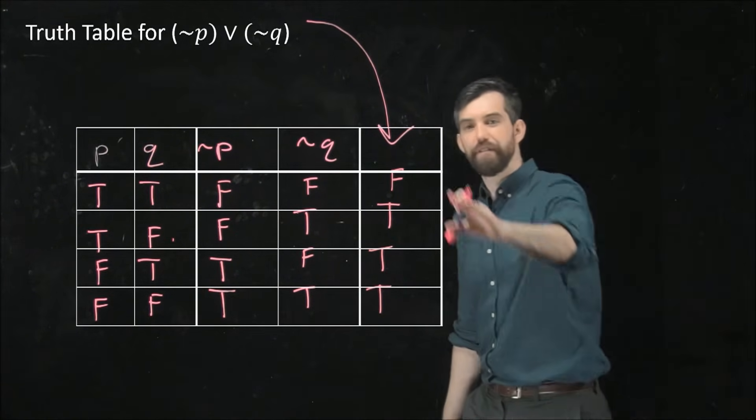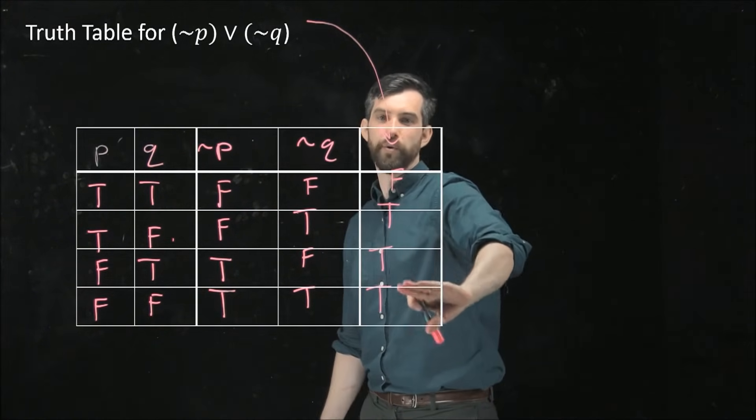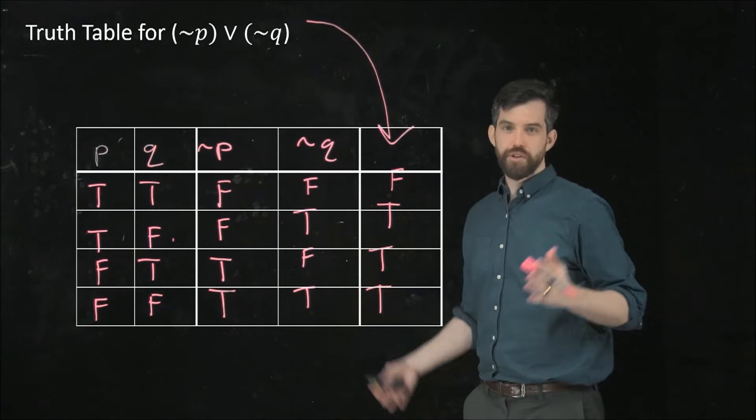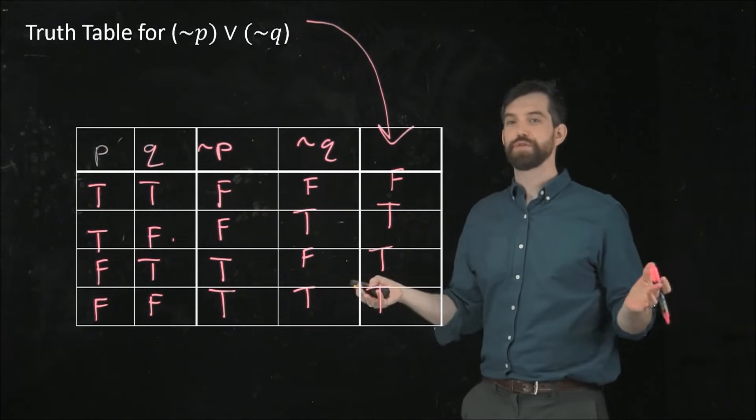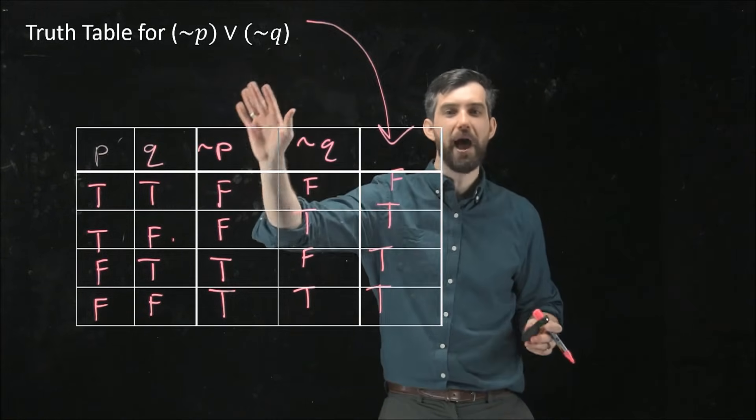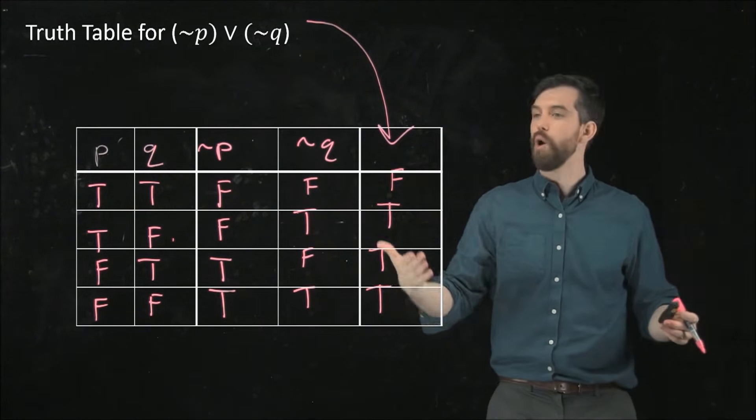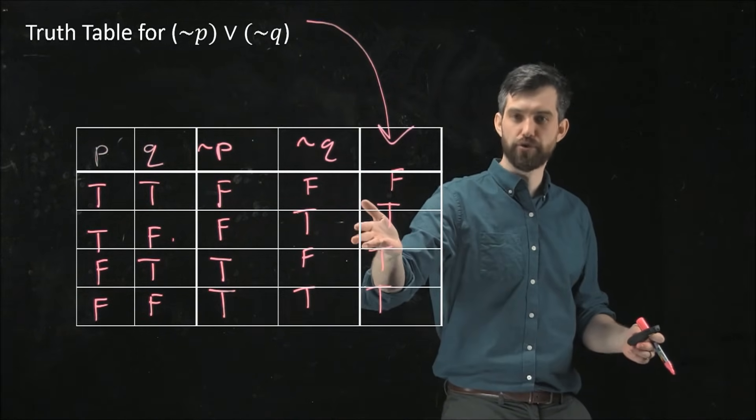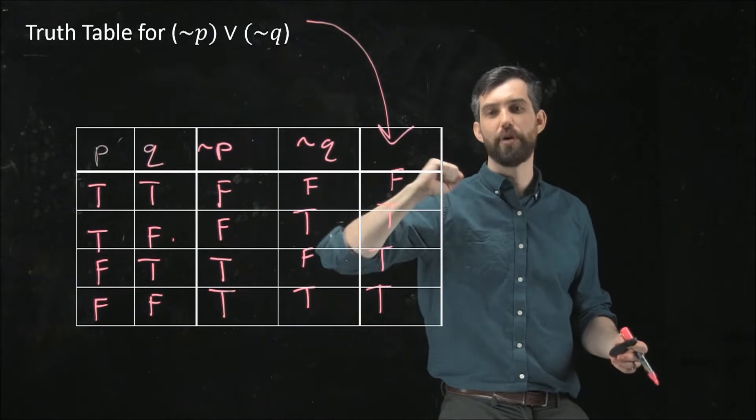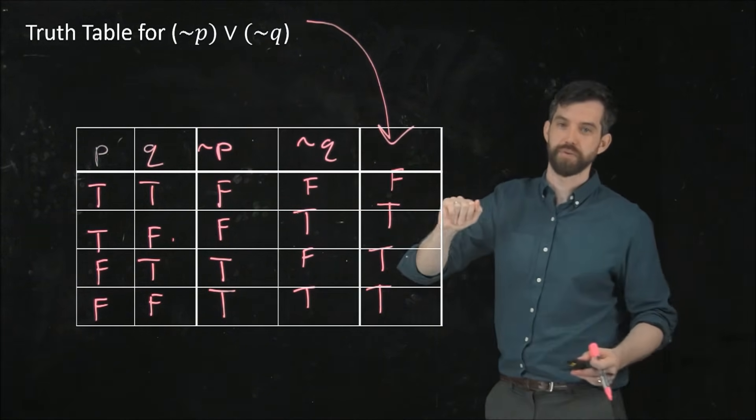So I get false, true, true, and true. These truth tables are very useful at taking these complicated, compounded logical statements and interpreting when they're false and when they're true, depending on the initial parameters, the P's and the Q's.